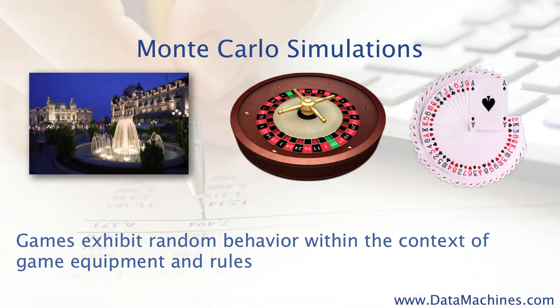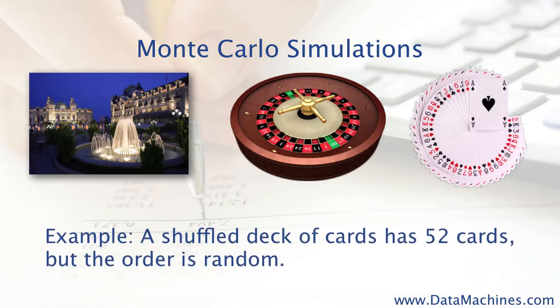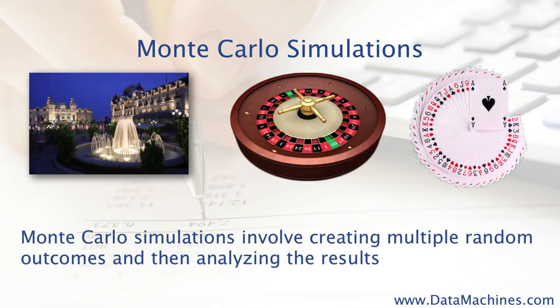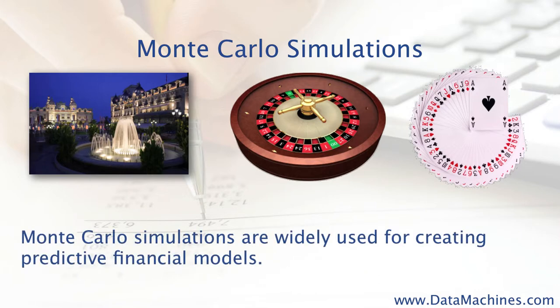Games of chance exhibit random behavior within the context of game equipment and rules. For example, a shuffled deck of cards will contain 52 cards, but the card order will be random. Monte Carlo simulations involve creating multiple random outcomes, usually based on probability distributions, and then statistically analyzing the results. This type of Monte Carlo simulation is widely used in predictive financial modeling.